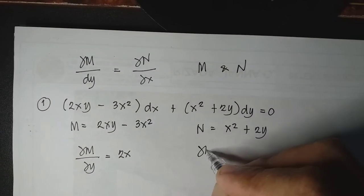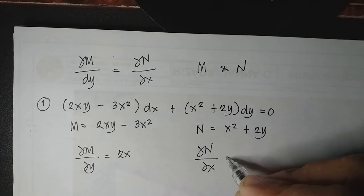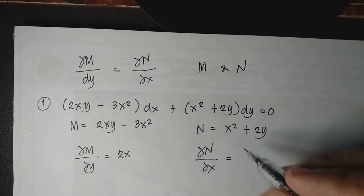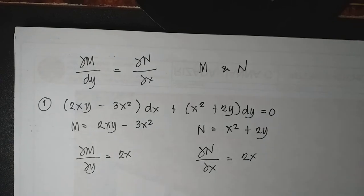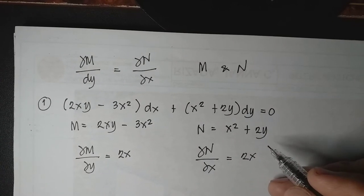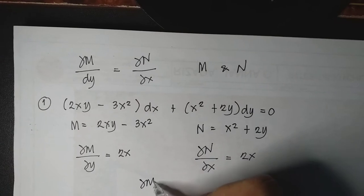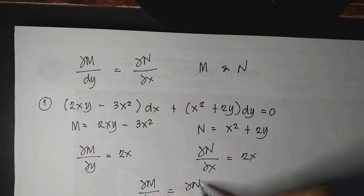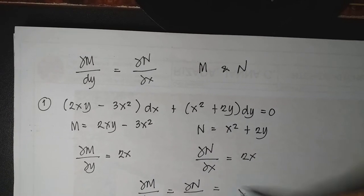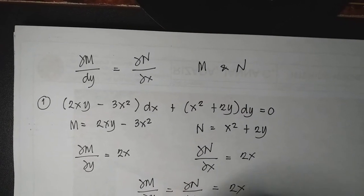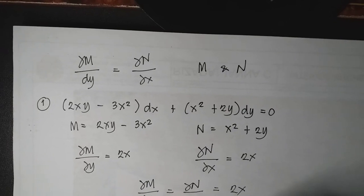Now let's find the derivative of N in terms of X, holding Y constant. The derivative of x² is 2x. Since we hold Y constant, 2y is a constant and its derivative is 0. So the derivative of N in terms of X is also 2x. Since the derivative of M in terms of Y equals the derivative of N in terms of X — both equal 2x — the equation is exact.